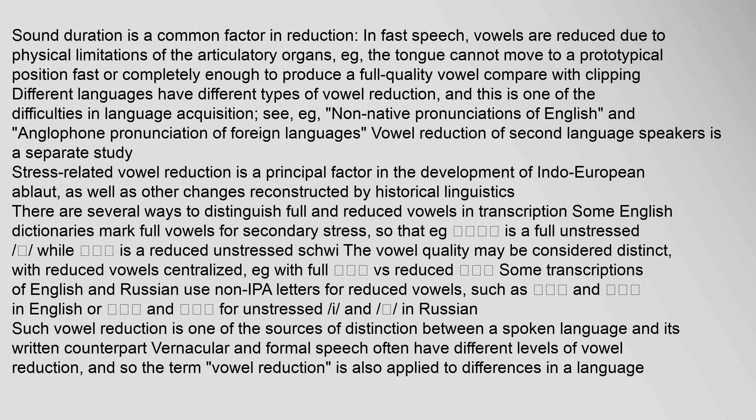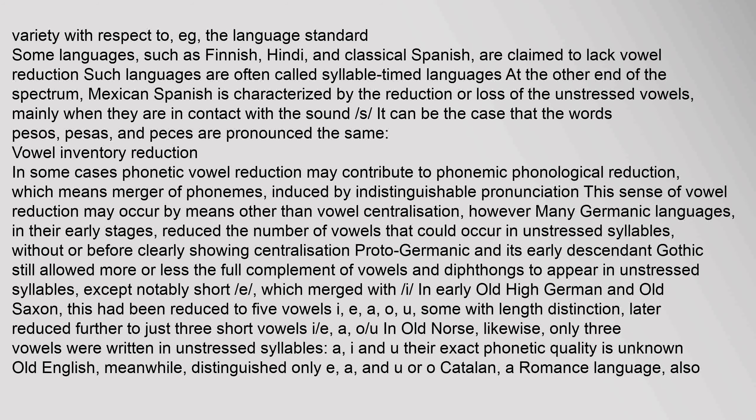The vowel quality of reduced vowels may be considered distinct, with reduced vowels centralized. Some transcriptions of English and Russian use non-IPA letters for reduced vowels. Such vowel reduction is one of the sources of distinction between a spoken language and its written counterpart. Vernacular and formal speech often have different levels of vowel reduction, and the term is also applied to differences within a language variety with respect to the language standard. Some languages, such as Finnish, Hindi, and Classical Spanish, are claimed to lack vowel reduction; such languages are often called syllable-timed languages. At the other end of the spectrum, Mexican Spanish is characterized by the reduction or loss of unstressed vowels, mainly when in contact with the sound /s/, such that the words pesos, pacers, and paces may be pronounced the same.